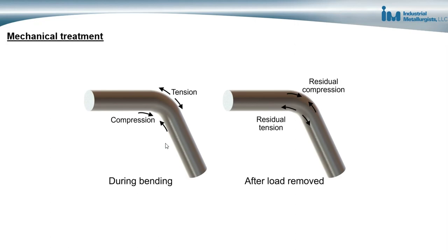First, mechanical deformation — when a piece of metal is deformed during component fabrication, such as forging, stamping, or bending processes, stress is applied to the metal and causes permanent deformation.